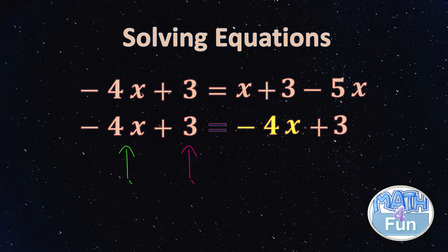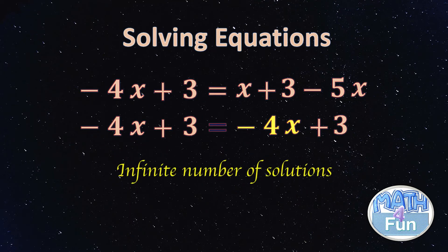Look at the equation now. Here we have -4x + 3 equals -4x + 3. If you want to solve this straightforward, once you find the left side of the equation is exactly identical with the right side, you can say infinite number of solutions, straightforward.